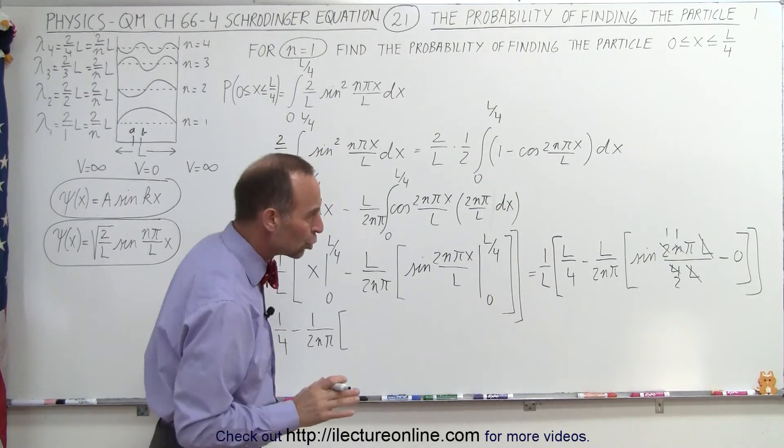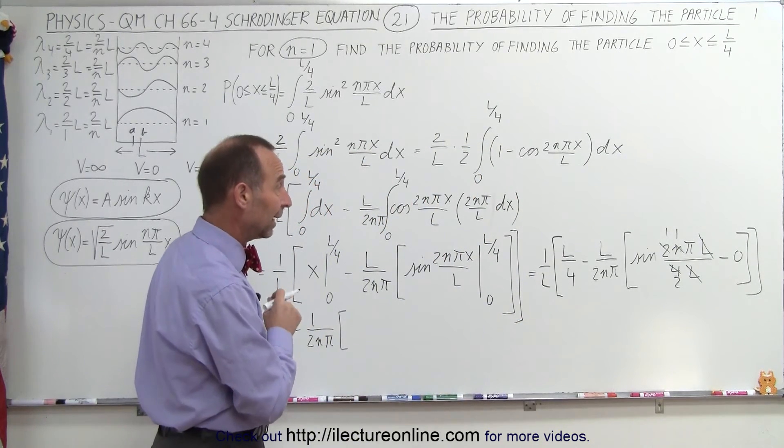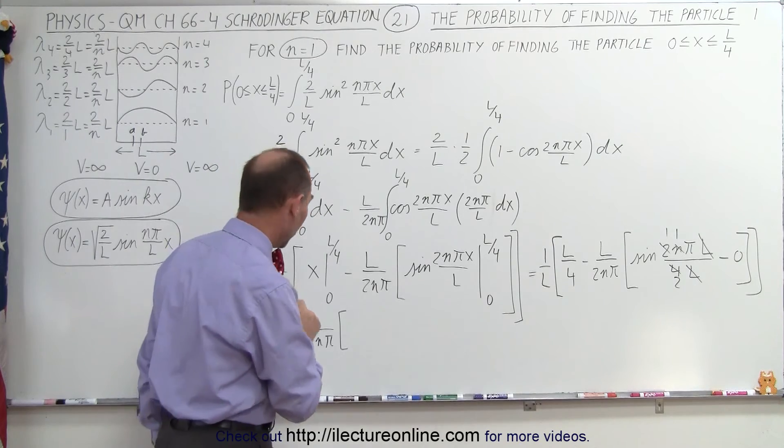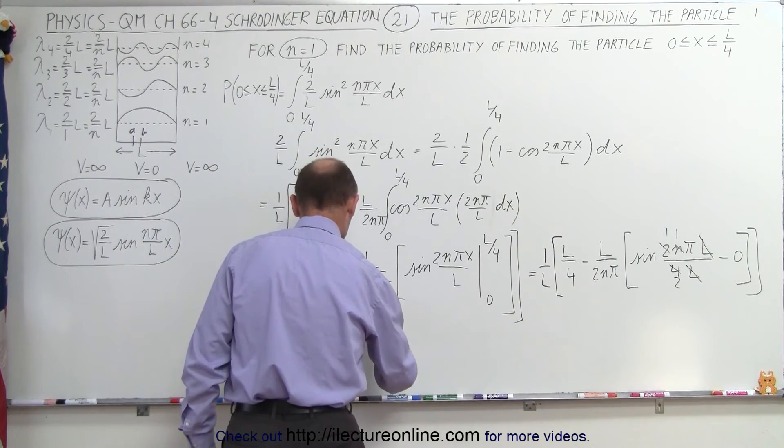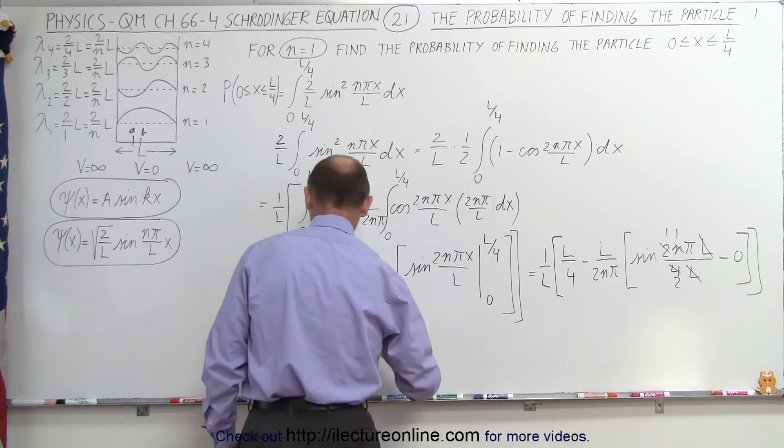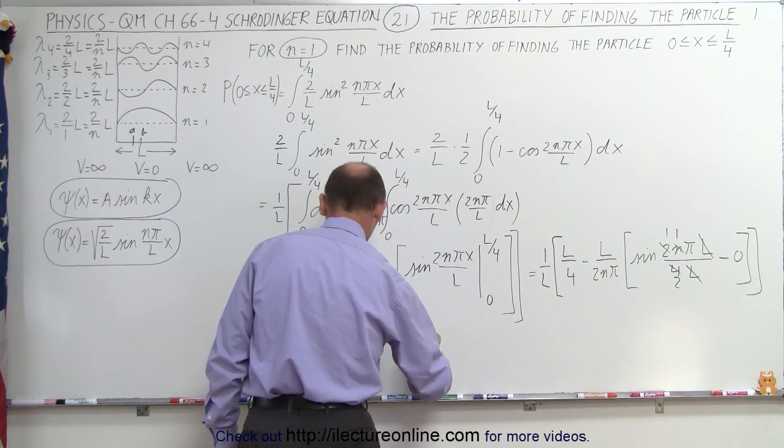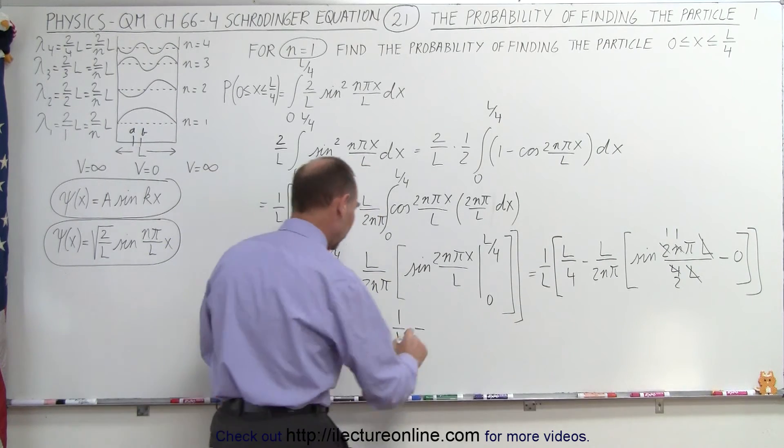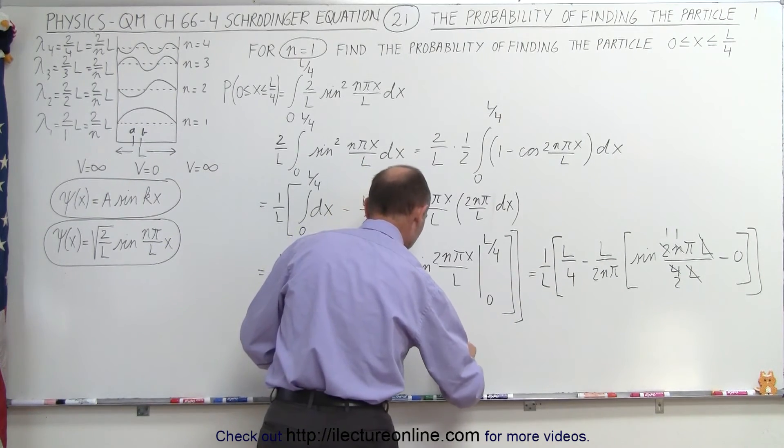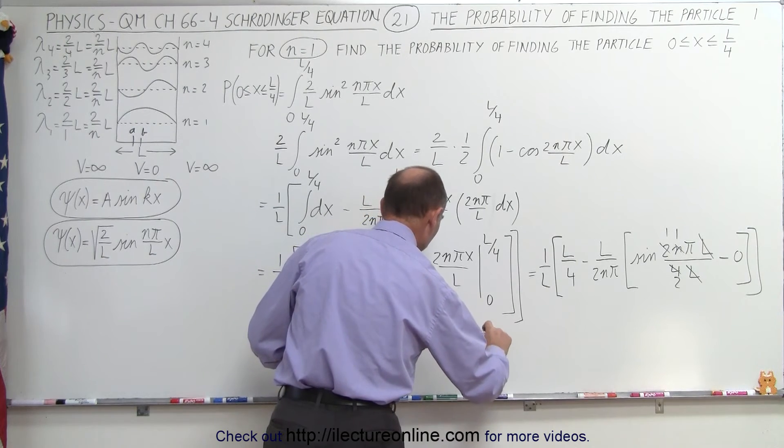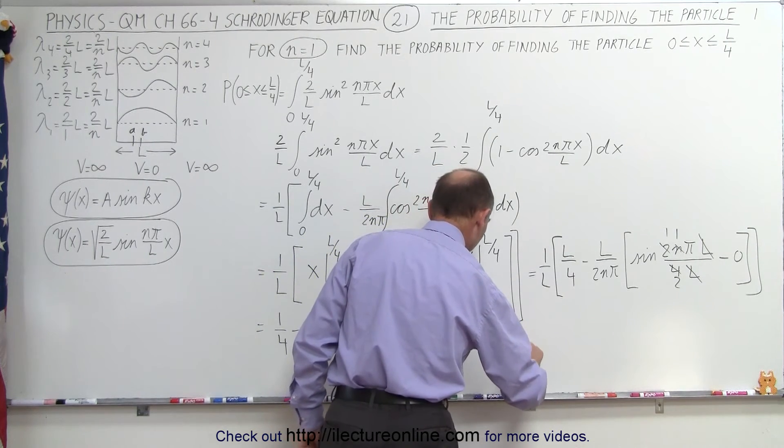The sine of pi divided by 2, well, that's 90 degrees, so that would be 1. So that would be times 1. And so this therefore becomes equal to one over 4 minus, since N is 1, that would be 1 divided by 2 pi, which is 0.25 minus 1 over 2 pi.